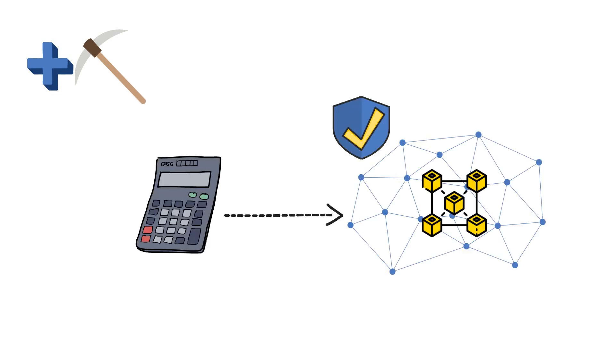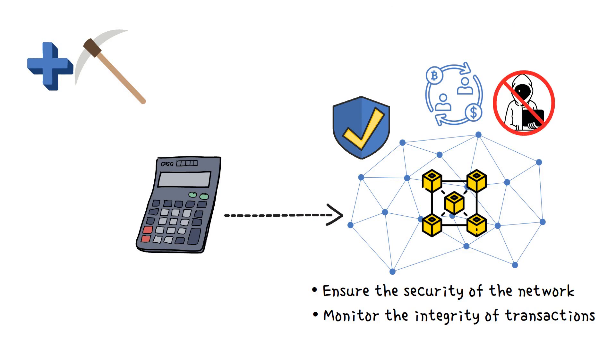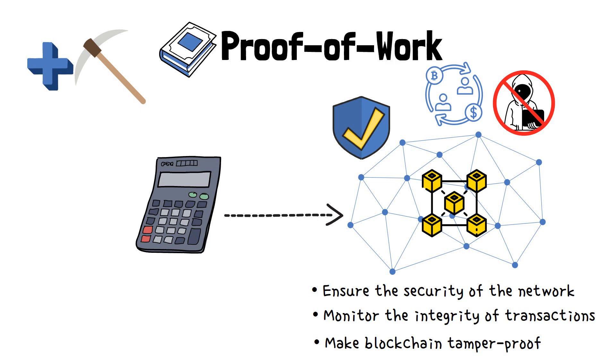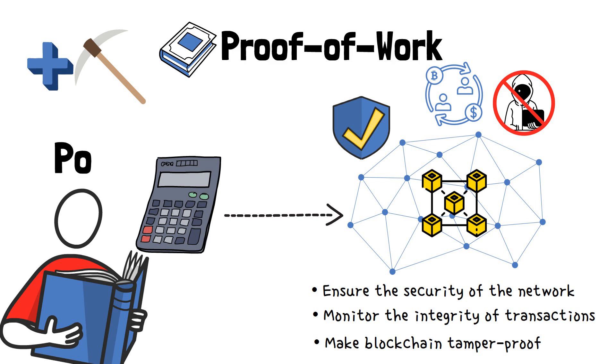In addition to mining, this computational effort is used to ensure the security of the network, constantly monitor the integrity of transactions, and make it near impossible for malicious actors to manipulate the blockchain's transaction history. So, that's the definition of proof-of-work, the consensus mechanism. But, as you'll soon see, understanding POW is almost the same as understanding crypto mining as such.